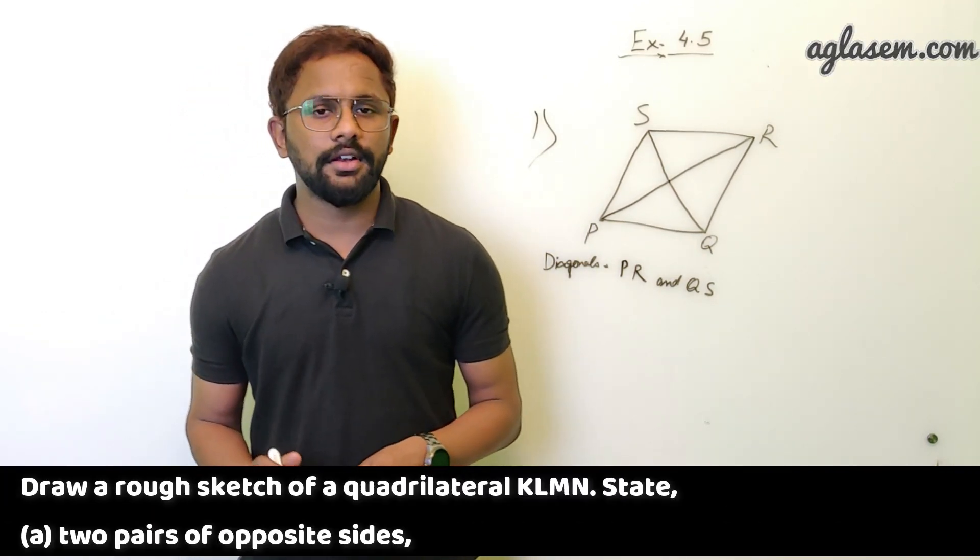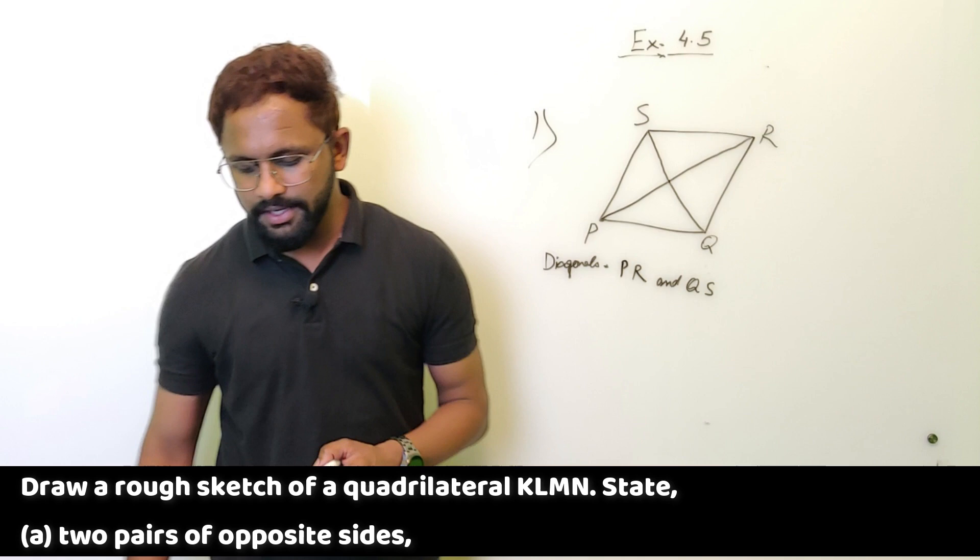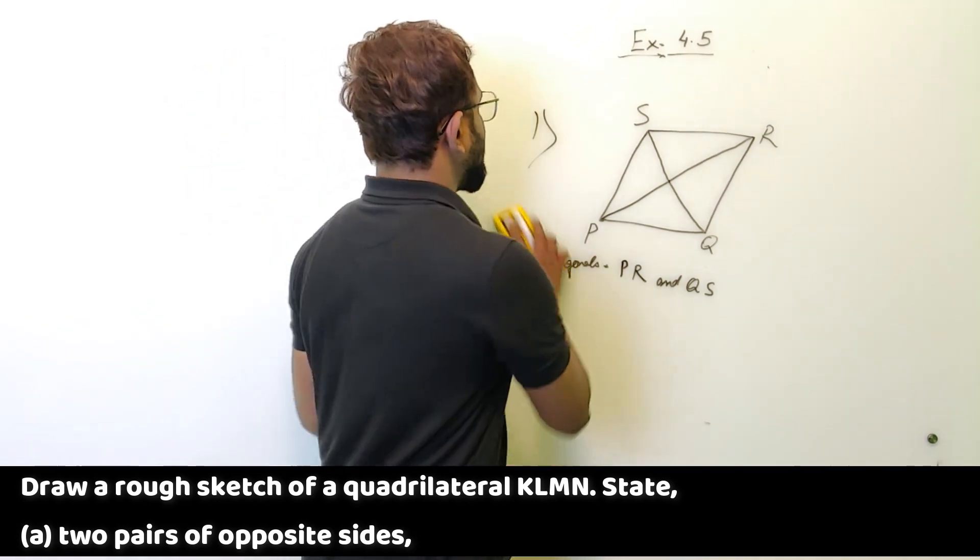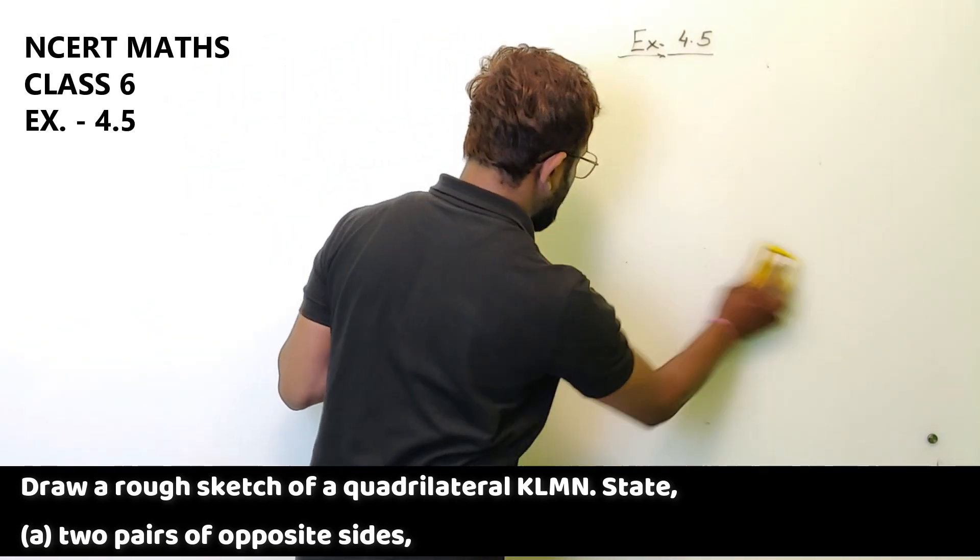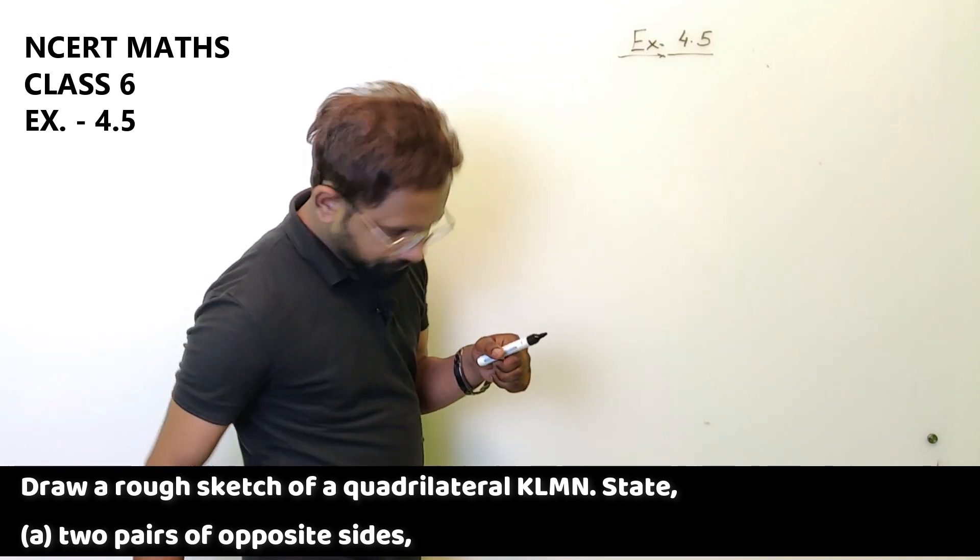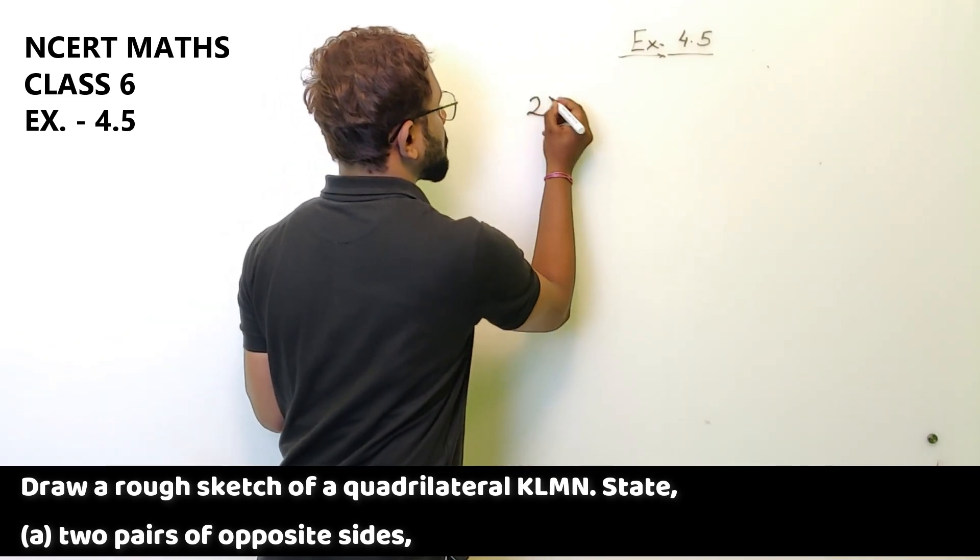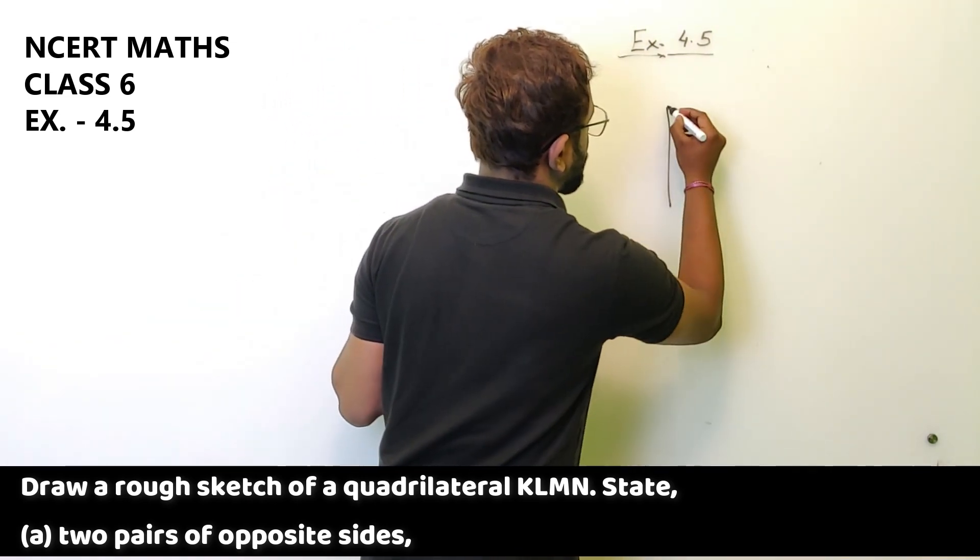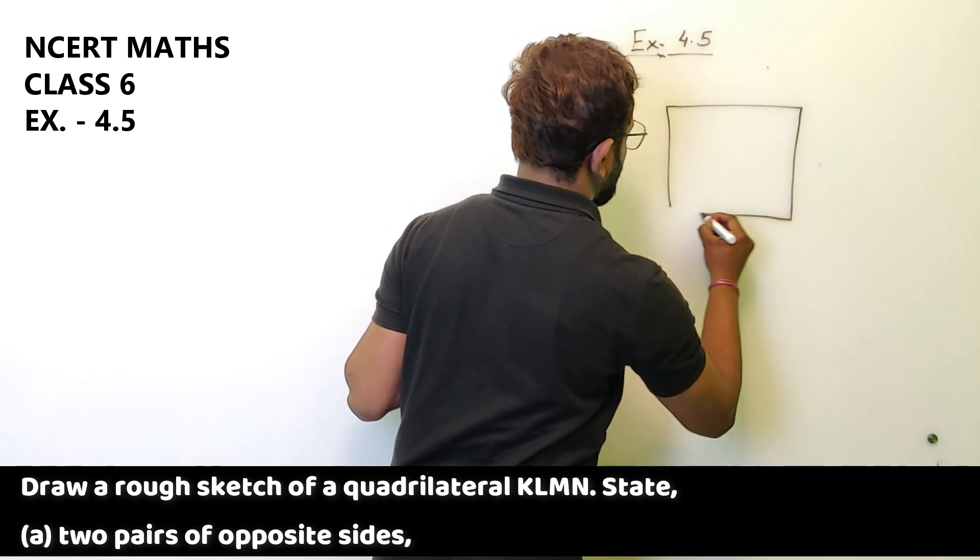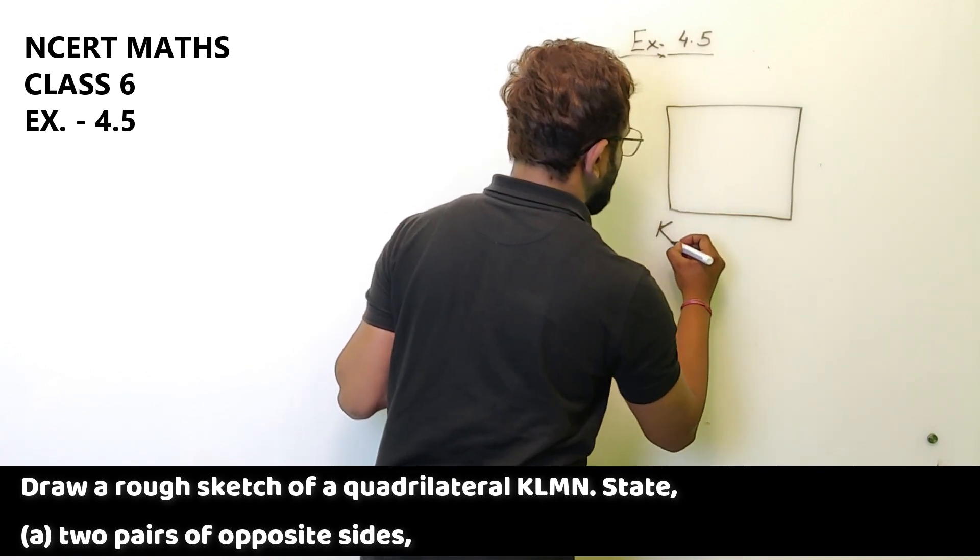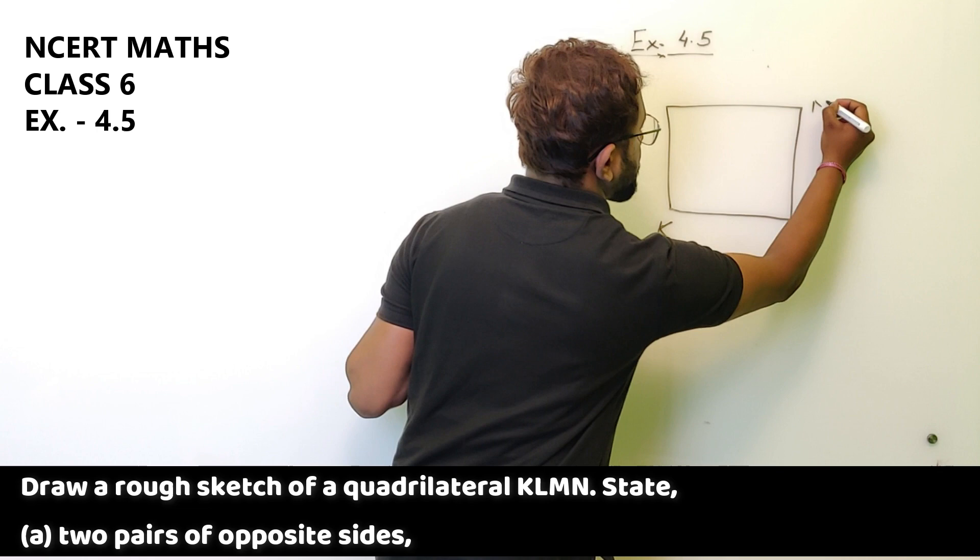Draw a rough sketch of a quadrilateral KLMN and state. Let's draw it first and then we will go one by one. KLMN.